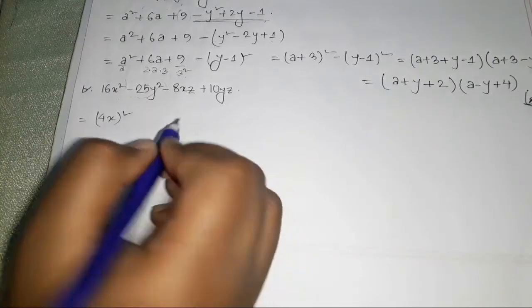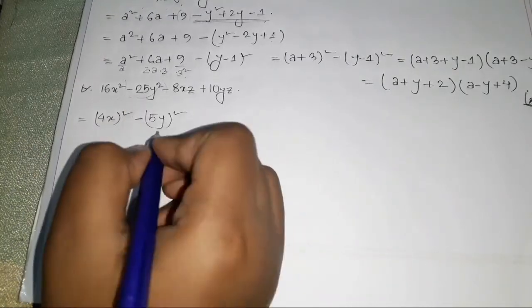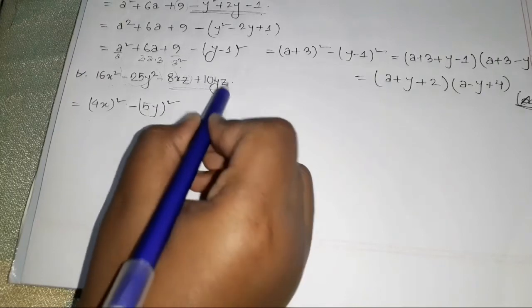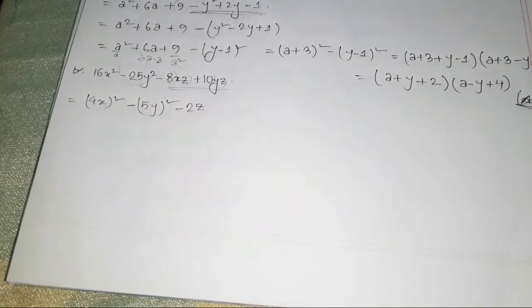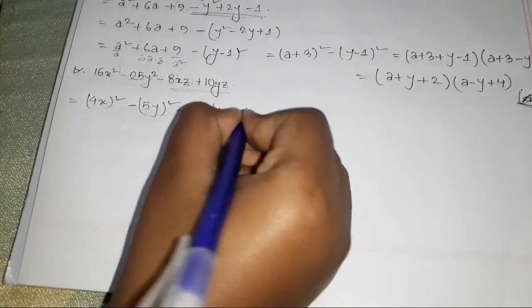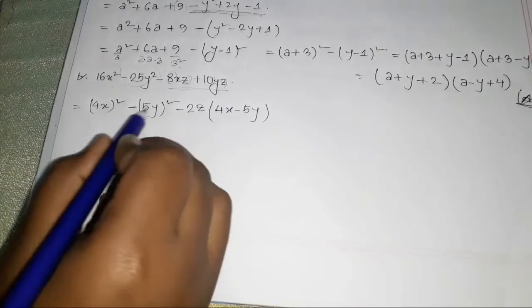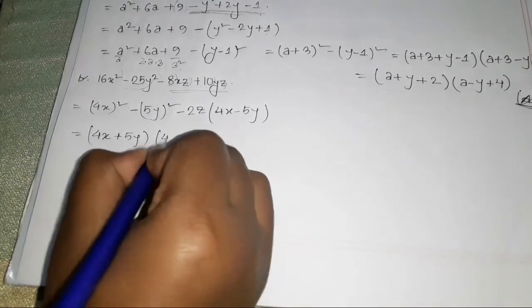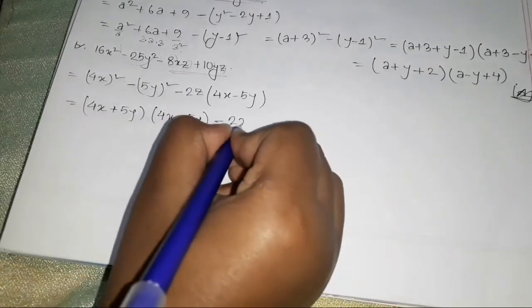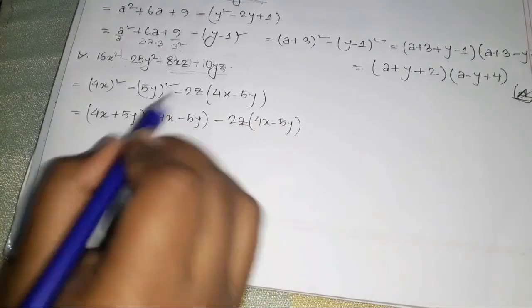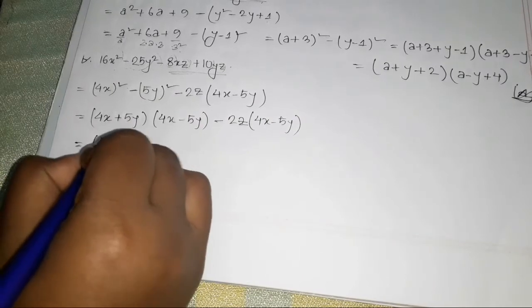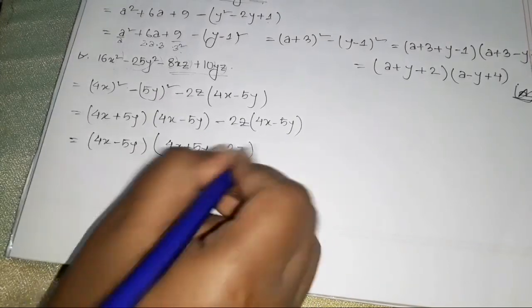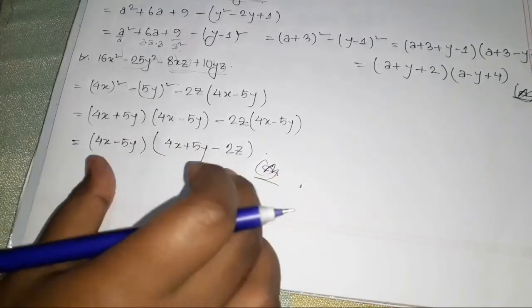Next problem: 16x² - 25y² - 8xz + 10yz. Rearranging, we can take 4x - 5y as the common factor. So we have (4x - 5y)(4x - 5y - 2z). We have factored it by taking the common term.